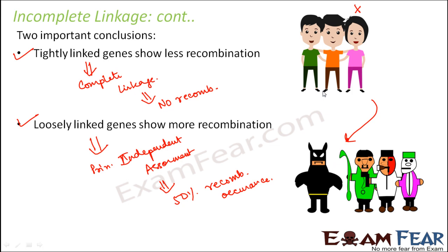If the genes are tightly linked, they are nearing towards complete linkage. Complete linkage means no recombination — only parental traits are inherited from one generation to the other. Loosely linked genes means the genes are not at all linked, either on different chromosomes or far apart on the same chromosome.